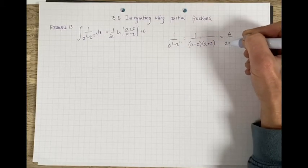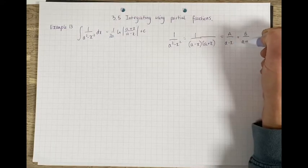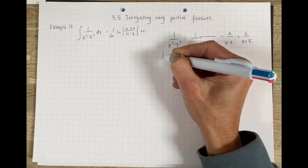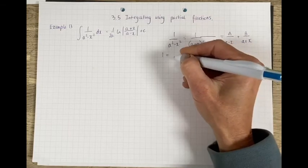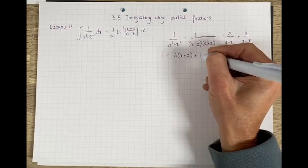Then comparing the numerators, you have 1 equals - so imagine bringing it to the common denominator - A is going to be multiplied by (a plus x) and B by (a minus x).